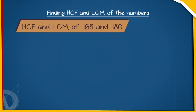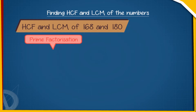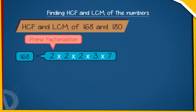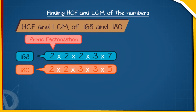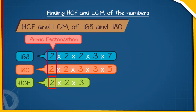Finding HCF and LCM: let us find the HCF and LCM of 168 and 180. First, we write the prime factorization of both numbers. 168 = 2 × 2 × 2 × 3 × 7 and 180 = 2 × 2 × 3 × 3 × 5. The HCF is equal to 2 × 2 × 3.